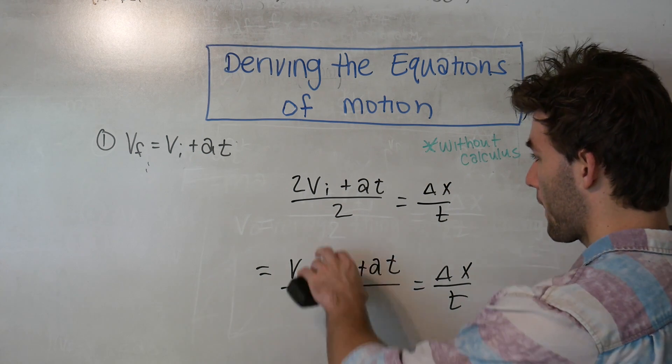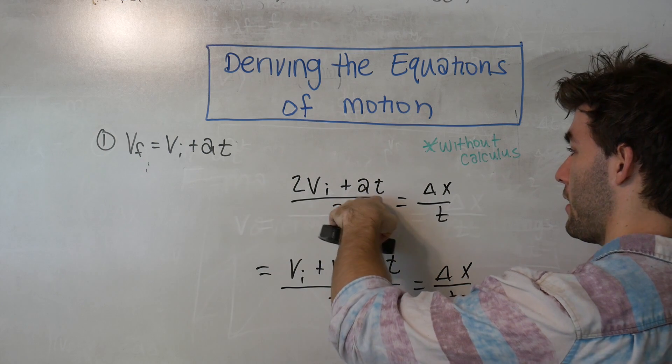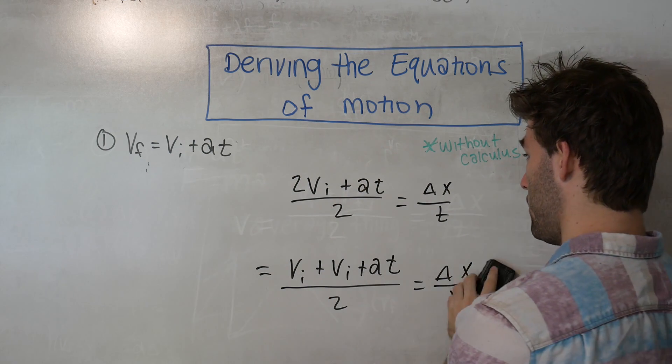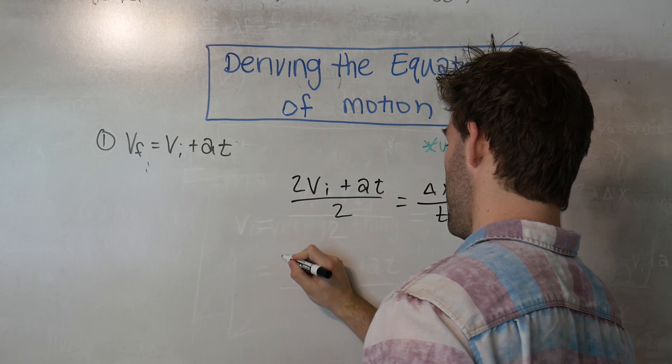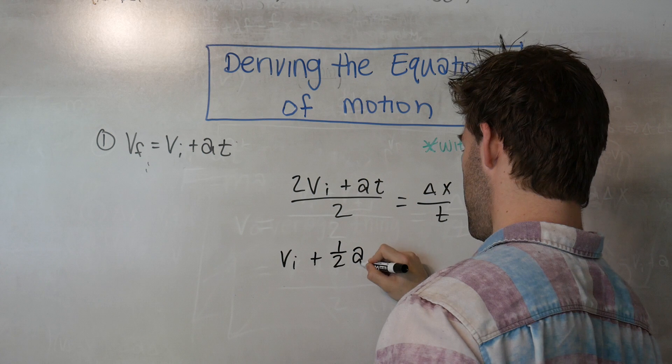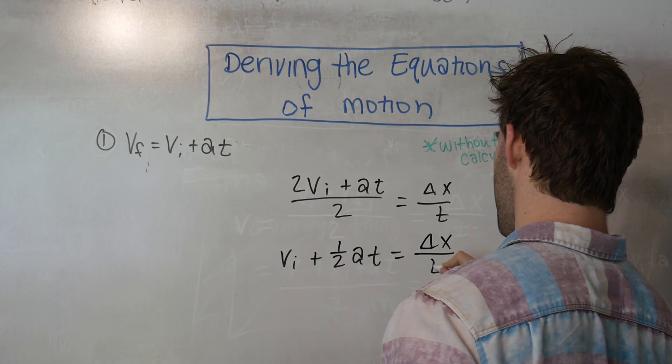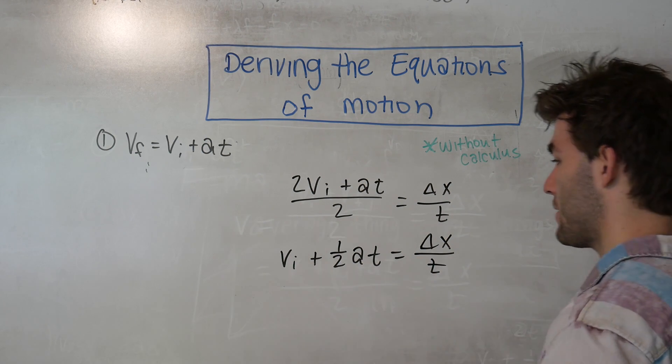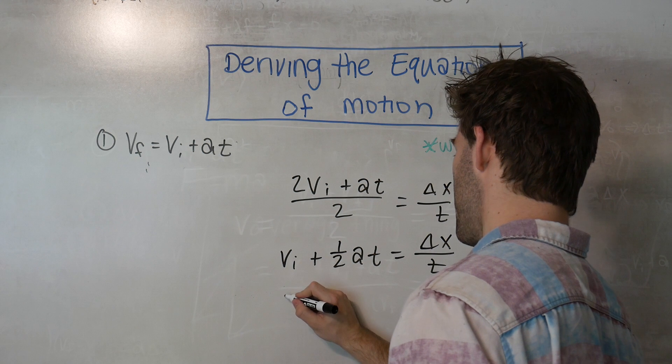Okay, so if we split up the fraction, the VI cancels with the 2 and we get an AT over 2 here. So this becomes VI plus 1 half AT is equal to delta X over T. And then all we have to do is distribute that T over and we get our second equation of motion.